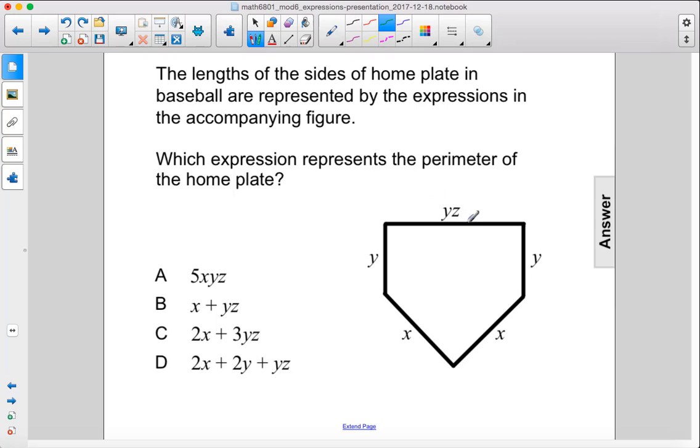All right, so we have to just add up all of these sides to find the perimeter. So starting here, that gives us yz plus y plus x plus x plus y.